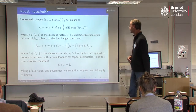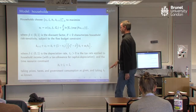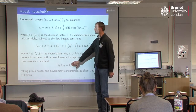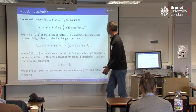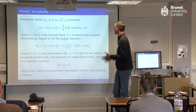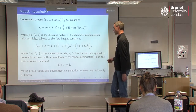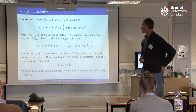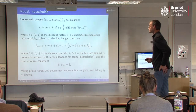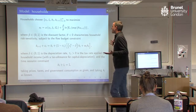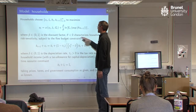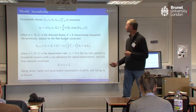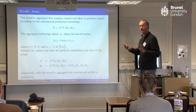We've got a time resource constraint — the total amount of labour and leisure provided by the household has to sum to one. The household is taking prices as given because of atomistic and perfectly competitive markets. So the only new parameter we really have here is this theta, the risk sensitivity parameter.